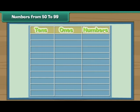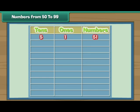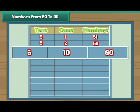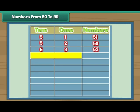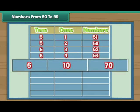Numbers from 50 to 99. Let us now complete one more table. Five tens and one give 51. Five tens and two give 52. Five tens and ten is 60. Six tens and three give 63. Six tens and four is 64. Six tens and ten is 70.